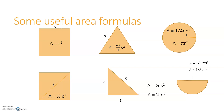Probably the one least familiar to you is the area of an equilateral triangle. If you want to derive it yourself, you can use trig to find the height of the triangle, knowing that all angles are 60 degrees, and then take the side length times the height.